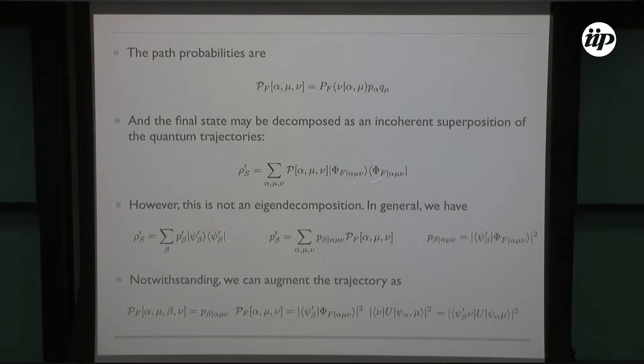Notwithstanding, we can define a probability of finding different eigenstates as being related to the sum over all paths times the conditional probability of finding the system in beta given that it was in one of these final states.